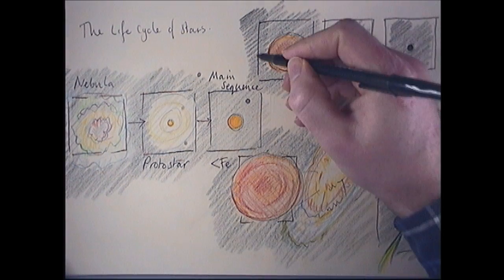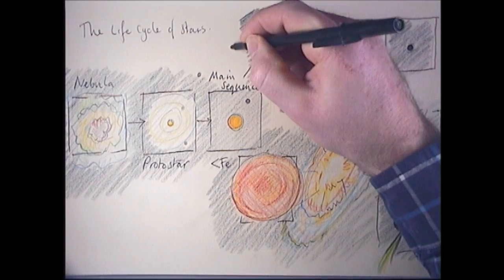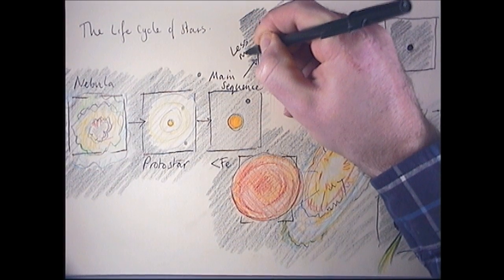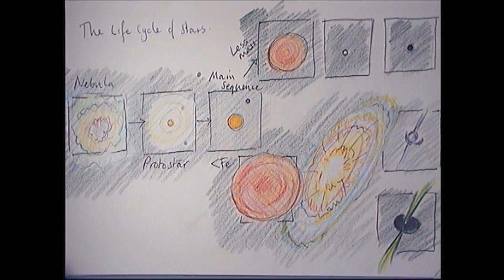Now again we have a choice. If it's got less mass, then these three things are going to happen to the star. This is what will eventually happen to our star.